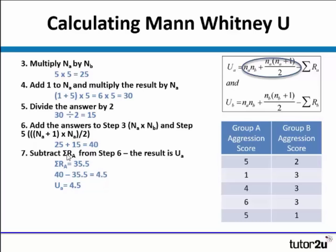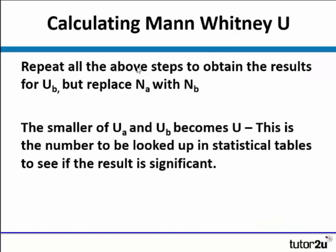We then need to subtract sigma RA, as you can see in the formula, from what we've just calculated, and this gives our answer for UA. Sigma RA is 35.5, so 40 take away 35.5 is 4.5, which gives us a score of UA = 4.5. We then have to do exactly the same for UB, but replace NA with NB. The smaller of the two calculated scores becomes the U value, which we look up in the statistical values table.